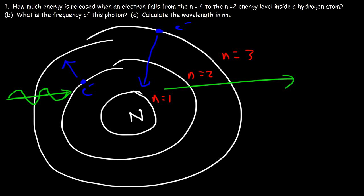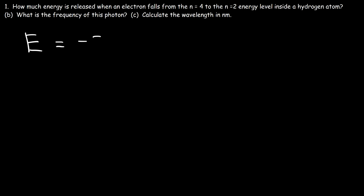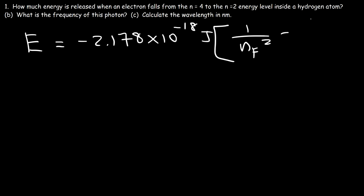The first question: how much energy is released when an electron falls from n=4 to n=2 inside a hydrogen atom? The equation you need is: E = −2.178 × 10⁻¹⁸ joules × (1/n_final² − 1/n_initial²). Here n_initial is 4 and n_final is 2. We just plug those numbers in to find how much energy is released.